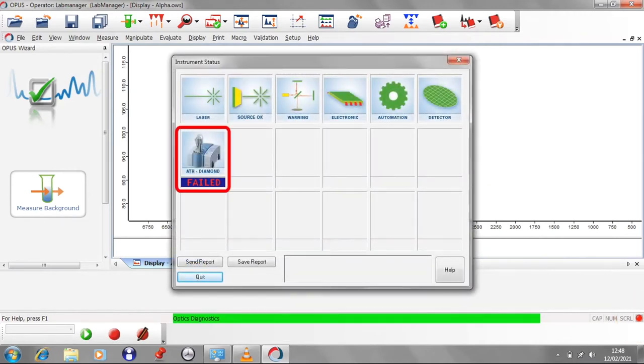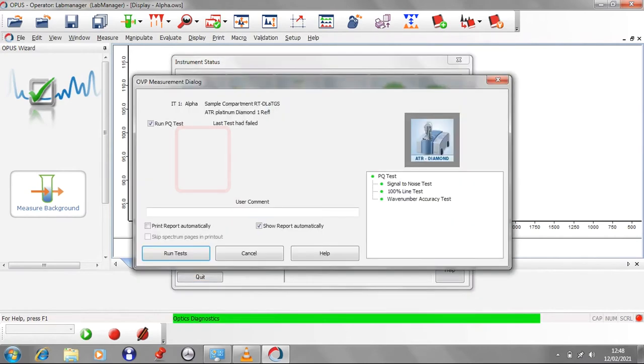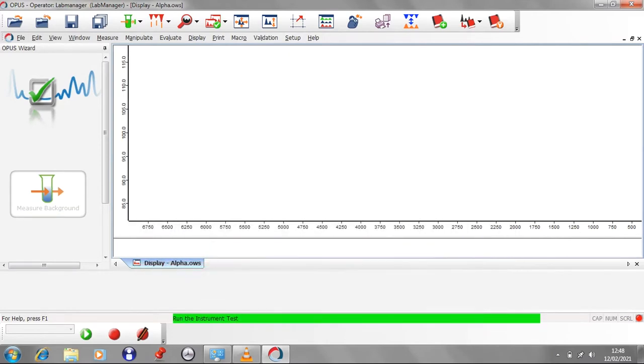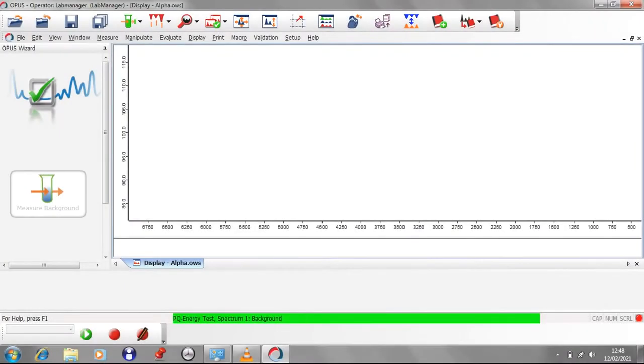If any of the instruments say failed or expired, double-click on the box describing the test to run the specific test which will correct the previous fault. The results of the second test should be success, which will be displayed in a PDF popup as shown here.